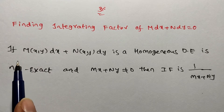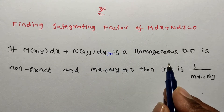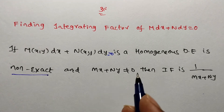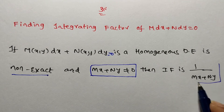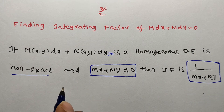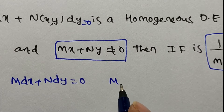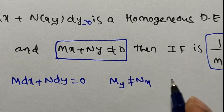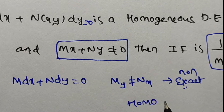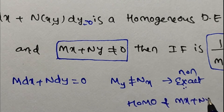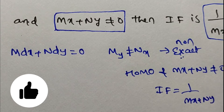Now friends, if the given differential equation is of the form M dx plus N dy equals 0 and is a homogeneous differential equation which is non-exact, and if it satisfies mx plus ny not equal to 0, then the integrating factor is 1 by mx plus ny. This is Rule 2.